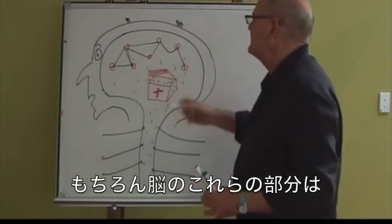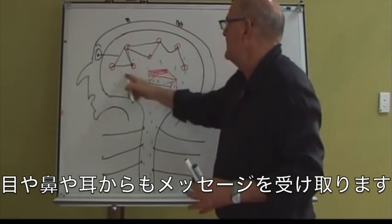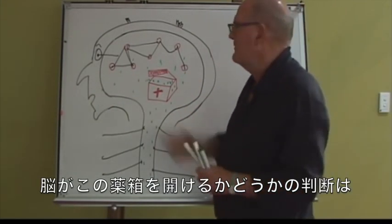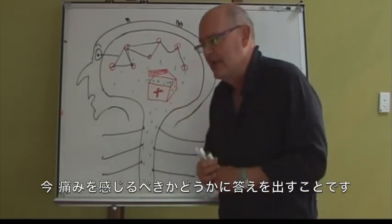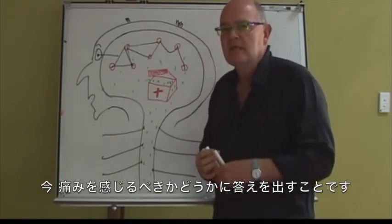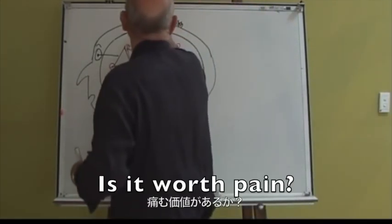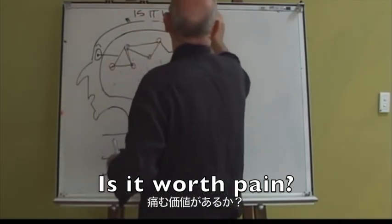And of course, these areas of the brain take their messages from the eyes, from the nose, and from the ears. But the key question the brain has to answer to work out whether it's opening up the drug cabinet is simply: is it worth making pain? Is it worth having pain?